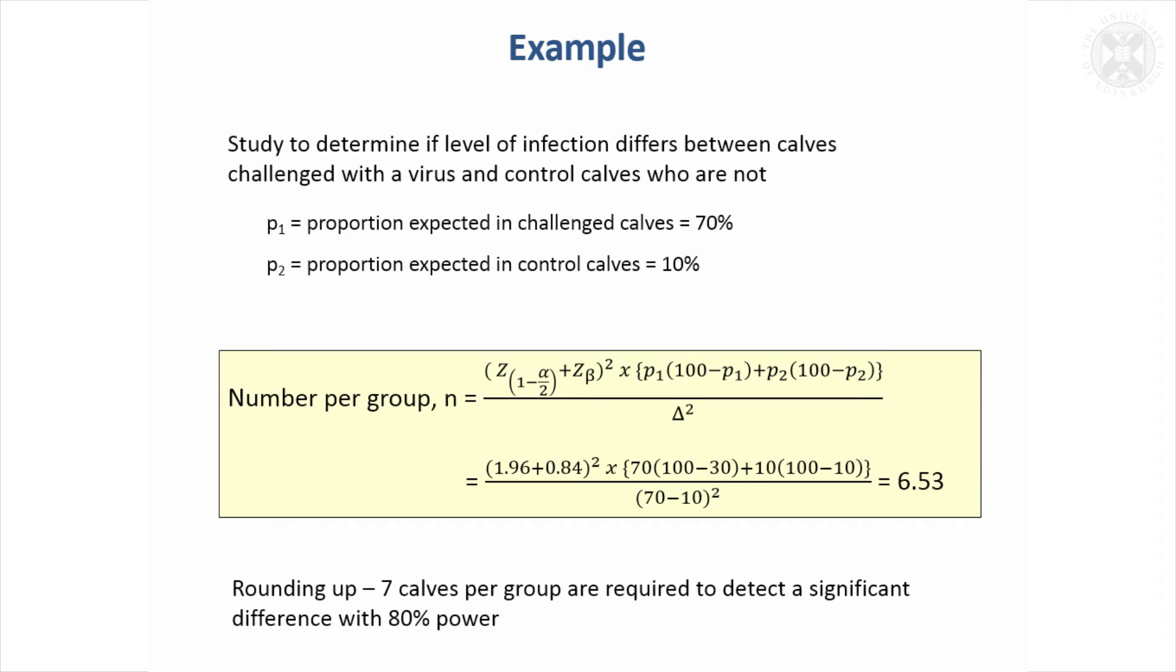You might perhaps hope to see that those that are challenged, 70% get this particular infection. If they're not, they might pick it up from somewhere else or from some of the other calves, and you might expect to see 10%. So you're saying, if I had this result, I want to know that there's a significant difference.